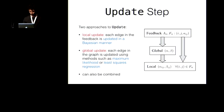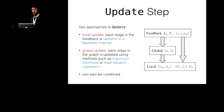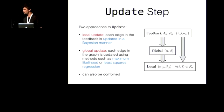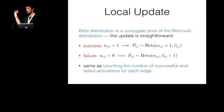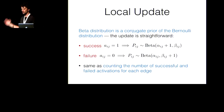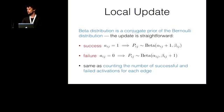Given this feedback, we update the model. The local update is straightforward: since the beta distribution is a conjugate prior of the Bernoulli distribution, we simply increment alpha for a successful activation on an edge or increment beta for a failure. This is equivalent to counting successful and failed activations, shifted by the prior.